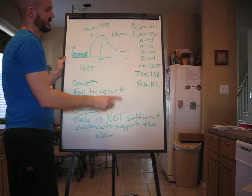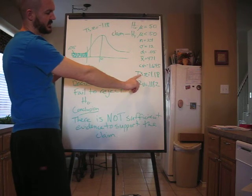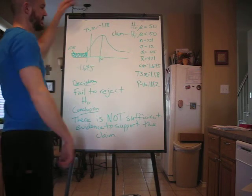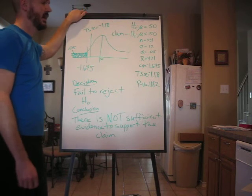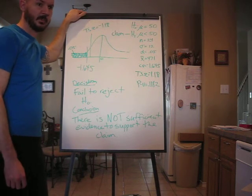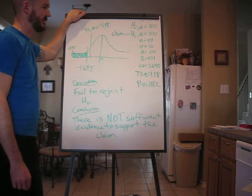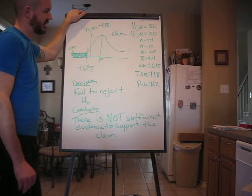Calculated a test statistic. Z equals negative 1.18. We did that by figuring x-bar minus mu over sigma over the square root of n. It gave us negative 1.18.